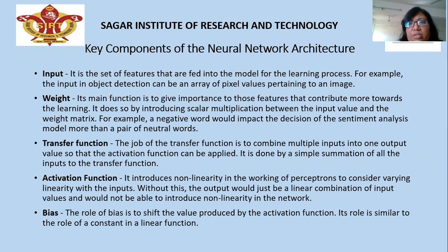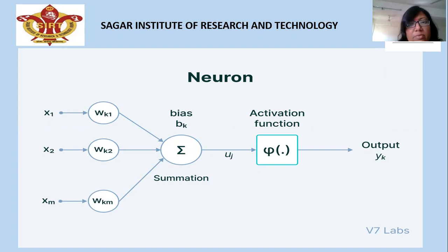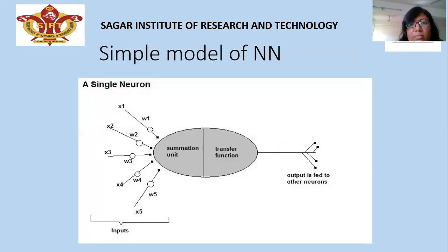The key components of the neural network architecture are: input, weight, transfer function, activation function, and bias. This is the simple model of a neural network, with inputs and corresponding weights, then bias. Bias is very important — if the summation of all inputs is zero, then the bias works and the model has some input even in the case of zero input.